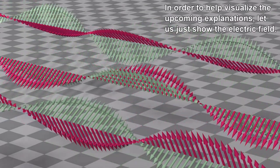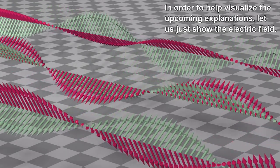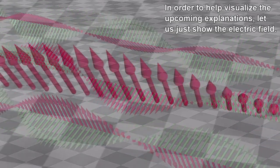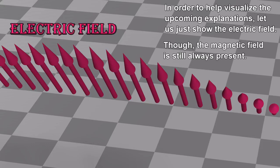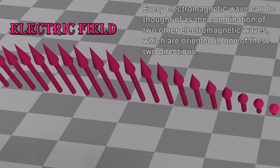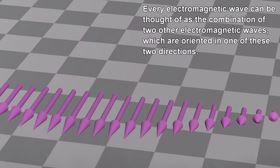In order to help visualize the upcoming explanations, let us just show the electric field, though the magnetic field is still always present. Every electromagnetic wave can be thought of as the combination of two other electromagnetic waves which are oriented in one of these two directions.